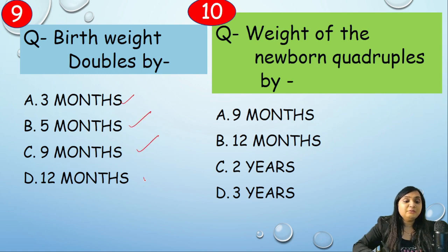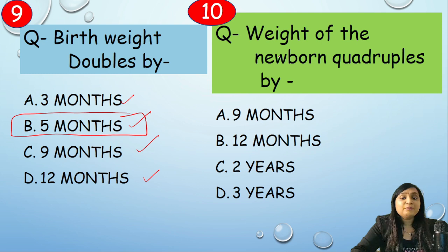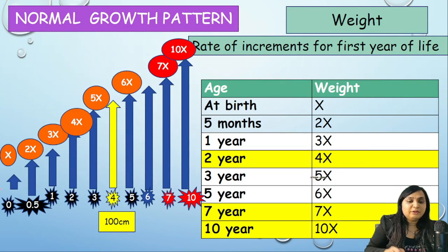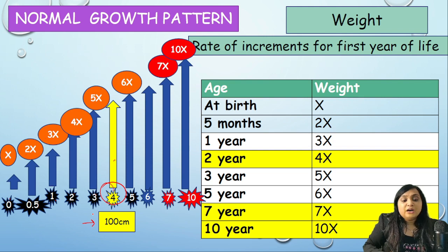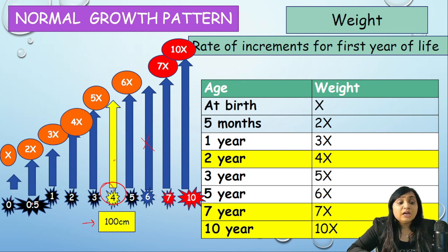Birth weight doubles by which age — 3 months, 5 months, 9 months, or 12 months? Correct answer: 5 months. Next question: weight quadruples by — 9 months, 12 months, 2 years, or 3 years? Correct answer: 2 years. Chart to remember: at birth X; 5 months 2X; 1 year 3X; 2 years 4X; 3 years 5X; 4 years — 100 cm height milestone; 5 years 6X; 7 years 7X; 10 years 10X.